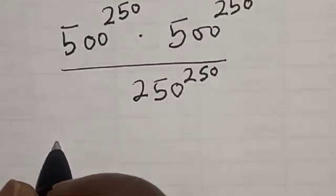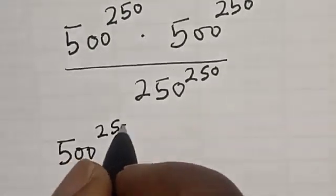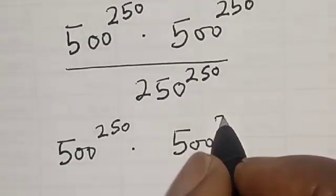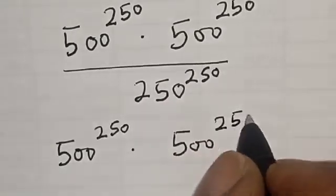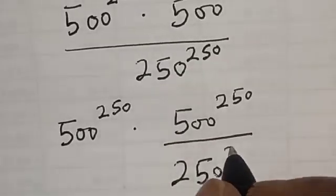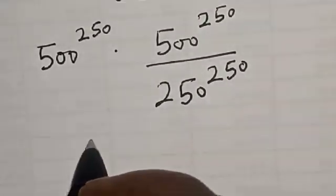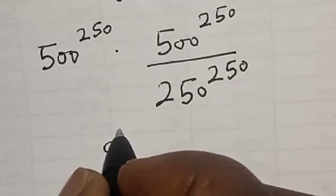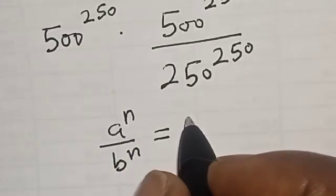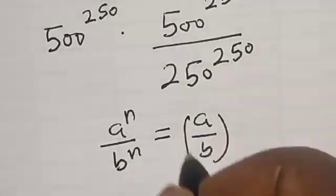We have 500 raised to power 250 multiplied by 500 raised to power 250, divided by 250 raised to power 250. Also remember that if you have A raised to power N divided by B raised to power N, this is equal to A divided by B, all raised to power N.